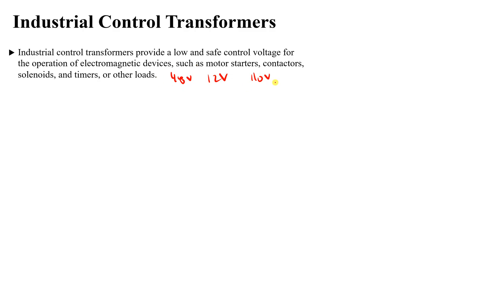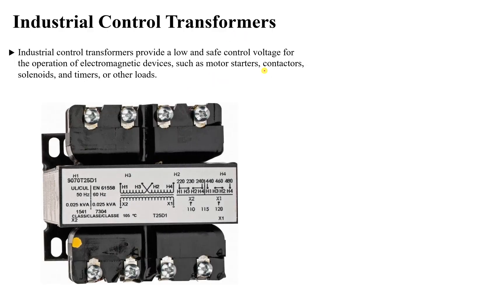In order to do this, we need to take 480 volts and step it down to a lower voltage, or take 240 volts and step it down. Now the industrial control transformer looks like this as you see here.